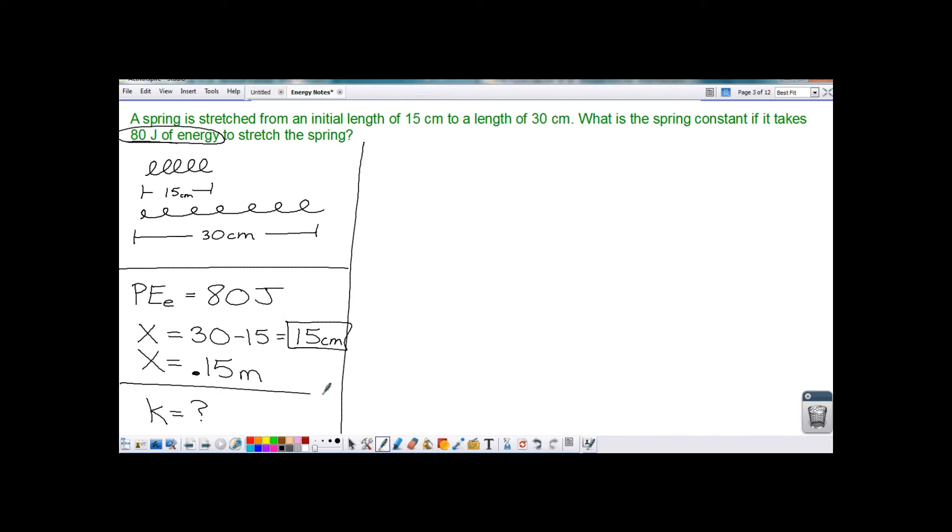We are trying to find the spring constant, K. So now we're going to look at our equation that we had in the last page. The potential energy that is elastic. So elastic potential energy is equal to one-half, the spring constant, times the distance the spring is stretched or compressed, squared.